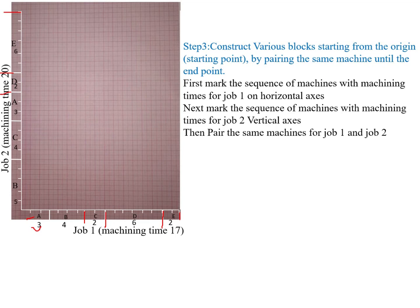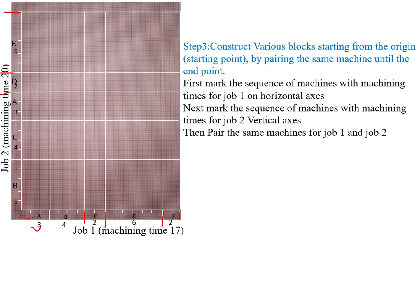Next, we draw horizontal and vertical lines at the end of the machining time for the respective machines for Job 1 and Job 2. We mark horizontal and vertical lines at the end of the machining time for each machine — A, B, C, D, E for Job 1 and B, C, A, D, E for Job 2.